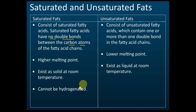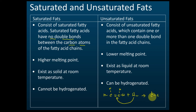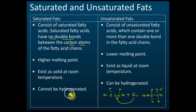Saturated fats cannot be hydrogenated, but unsaturated fats can be hydrogenated. For example, if you have an unsaturated molecule like ethene, you can add hydrogen atoms into the molecule — this process is called hydrogenation. After adding hydrogen, it becomes saturated because the double bond is gone. Since unsaturated fat has a double bond, we can add hydrogen to it. Saturated fat cannot have any more hydrogen added because it is already full — so it cannot be hydrogenated.